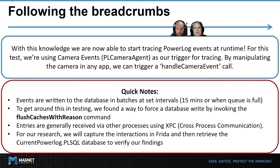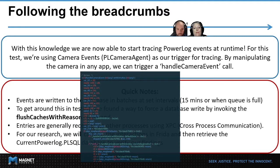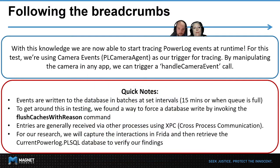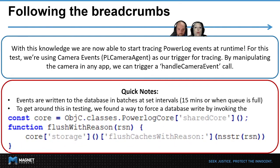Putting all this new knowledge together, we're now able to start tracing Powerlog events at runtime using Frida. For this test, we found that camera events via PL_camera_agent as a trigger were easy to use, because all we needed to do was manipulate the camera from within any app — such as turning the camera on and off or switching from front to back camera. We can trigger a handle_camera_event call and then review its parameters with Frida. We did notice that events are written to the database in batches at set intervals, either every 15 minutes or whenever the queue is full. This made testing tricky until we found the flush_caches_with_reason command, which forces a database write so we can validate our results.